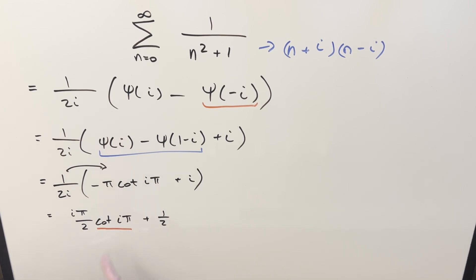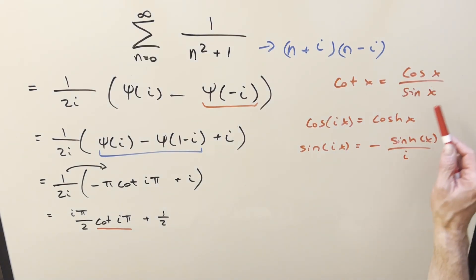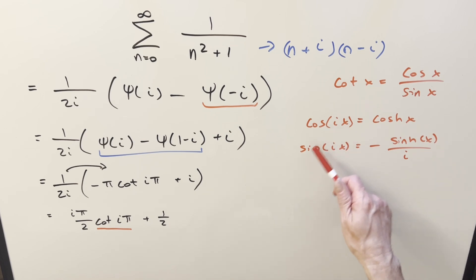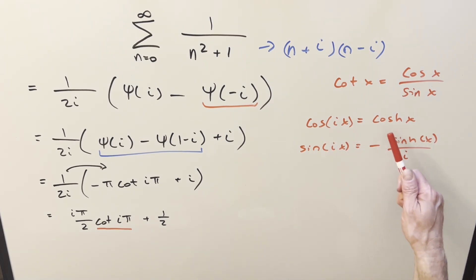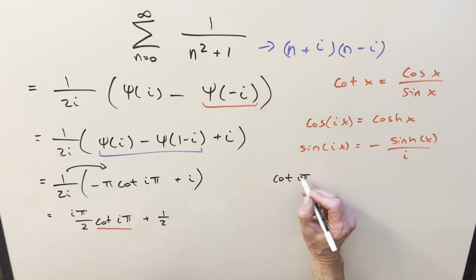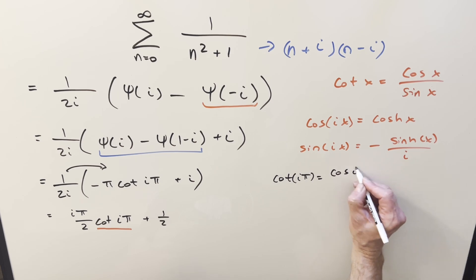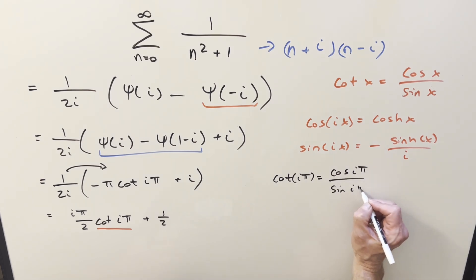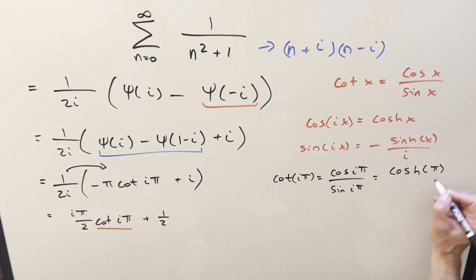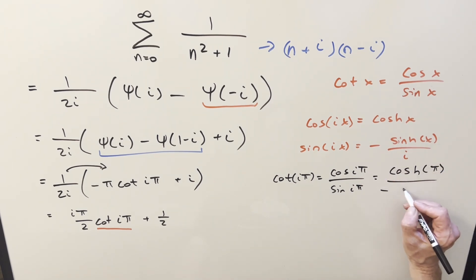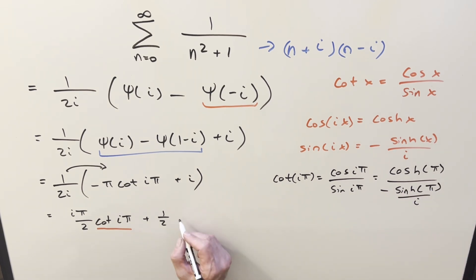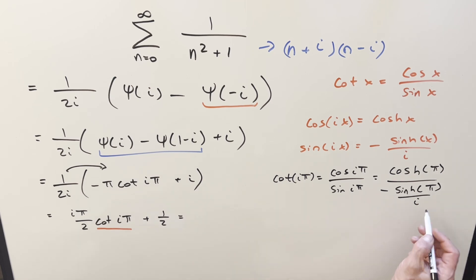Cotangent is just cosine over sine. We have two formulas to relate complex inputs on cosine and sine to the hyperbolic cosine and sine functions. So cotangent(iπ) equals cosine(iπ) over sine(iπ). Applying the formula, cosine(iπ) becomes cosh(π), and sine(iπ) becomes i·sinh(π). So cotangent(iπ) equals cosh(π) over (i·sinh(π)), and we bring the i into the numerator.